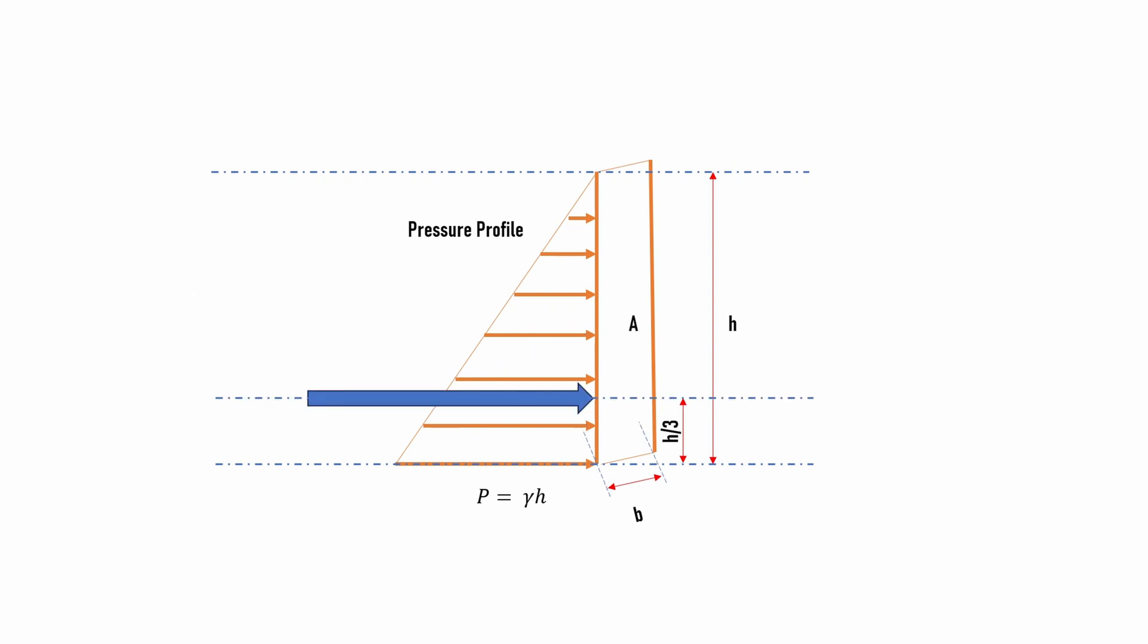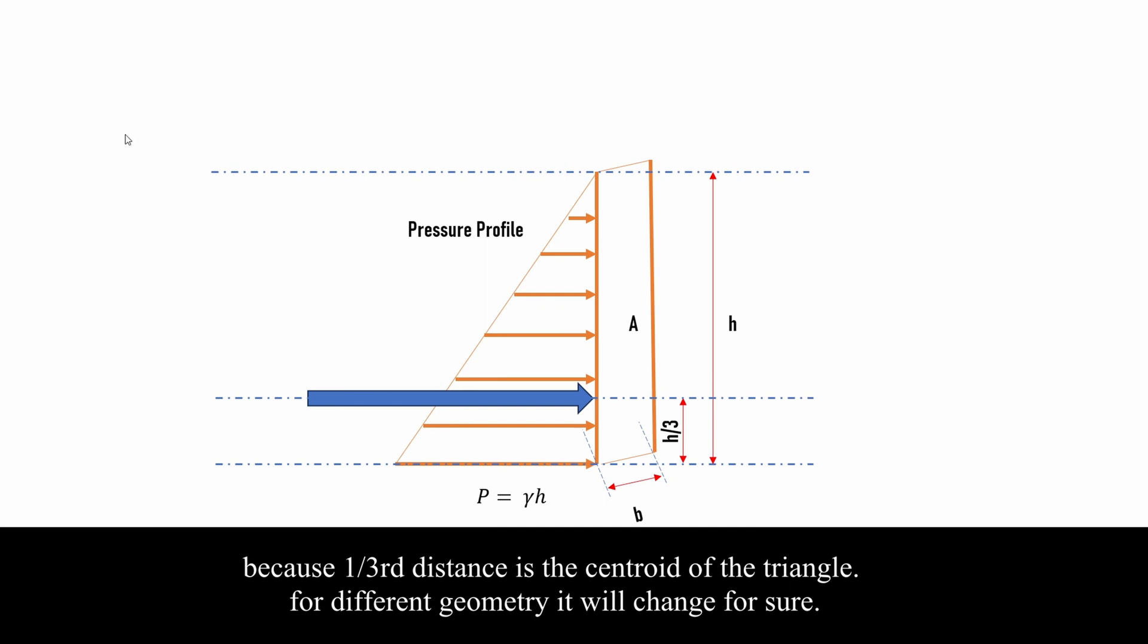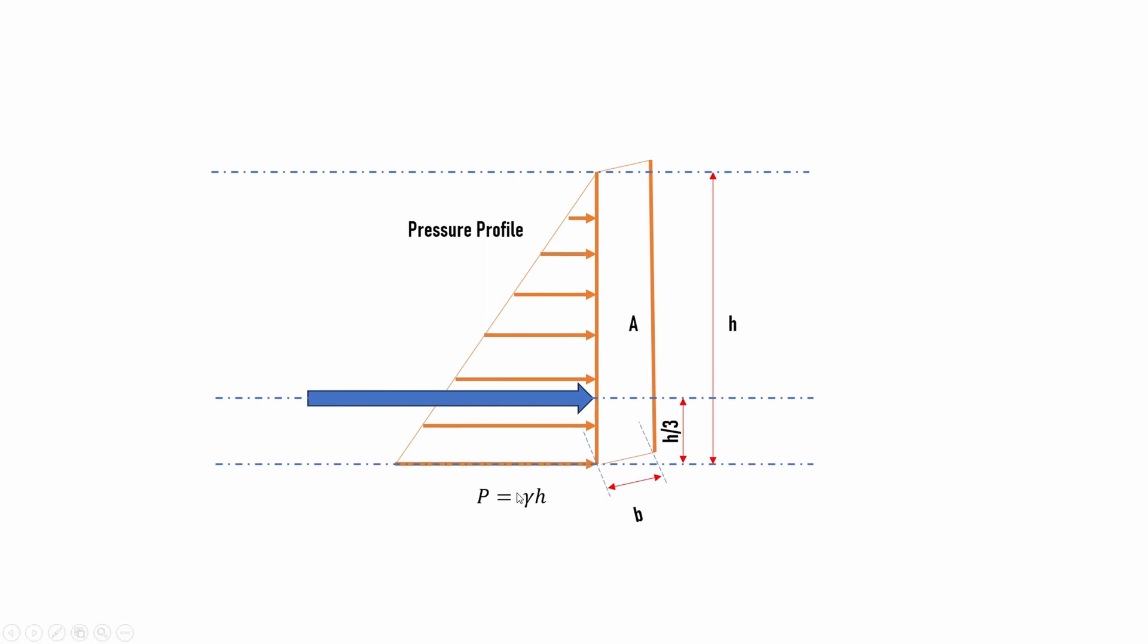Now, in order to find the center of pressure, we'll use the same method as in the previous problem. We need to find the one-third distance from the peak. Here the peak is at the highest depth, p equals gamma h. This is the peak, and we go one-third of the height. That means our height is h, it will work on the h by 3 distance from the bottom surface.